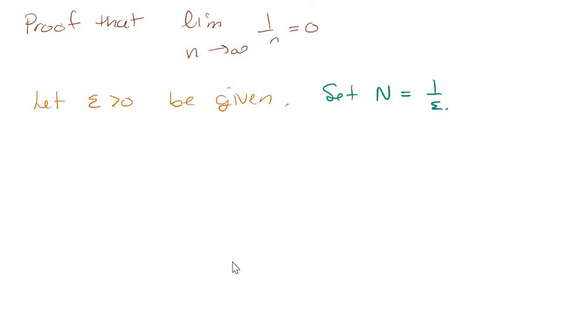Set capital N equal to one over epsilon. Now imagine you're a student and seeing this. You're like, why did he do that? Why did she do that?